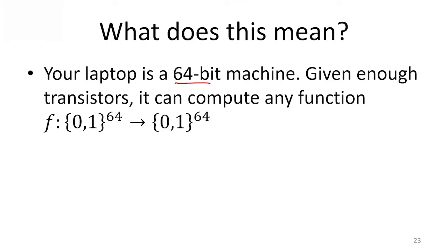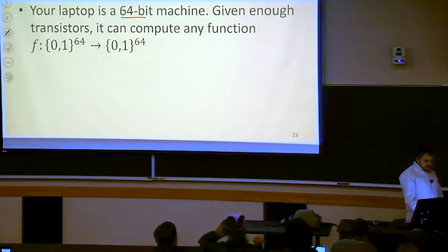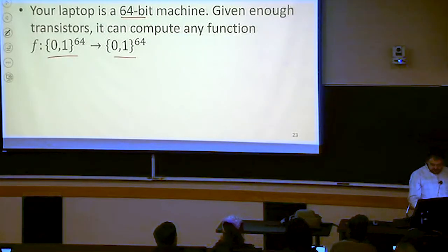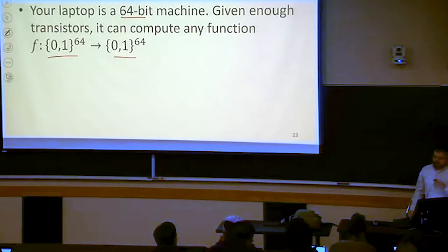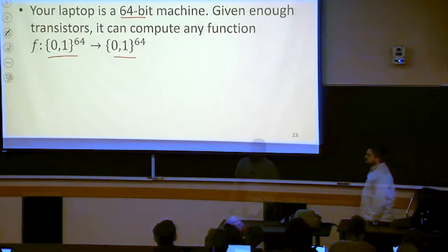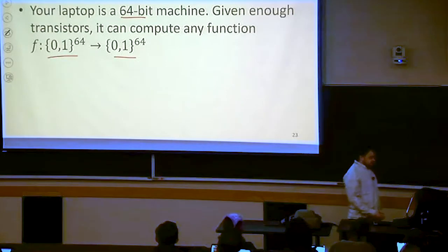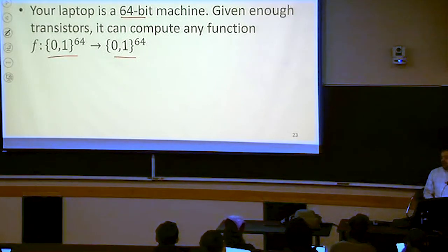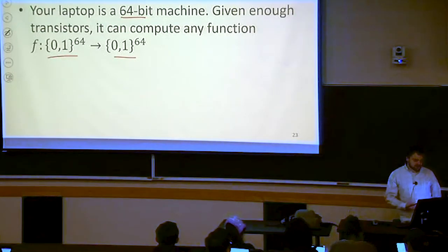So let's think a little bit about what this means in the real world. Your laptop is kind of a 64-bit machine, most likely. So that means that the length of the bit strings on your laptop is 64 bits. That means that if I gave you as many transistors as you could ever want, you could implement any function at all that maps inputs of 64 bits to outputs of 64 bits. Your computer, with its 64-bit architecture, if I gave you enough transistors, you could do that many things.